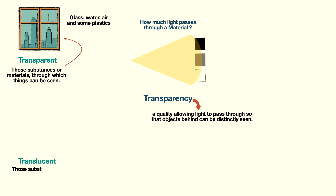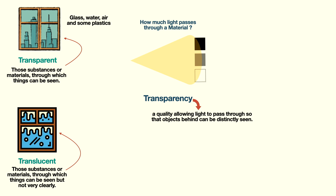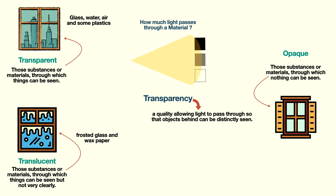The second type is translucent. They allow light to pass through but only partially. That's why we are able to see through translucent objects but not very clearly. An example is frosted glass, usually found in bathrooms. Lastly, we have opaque objects. Such objects block light completely, and that is why we cannot see through them. Examples include wooden objects, metallic objects, clothes, etc.